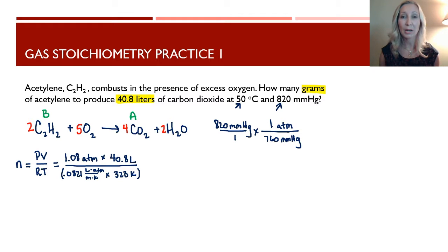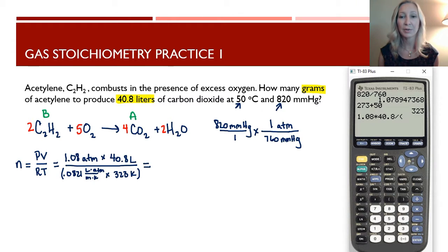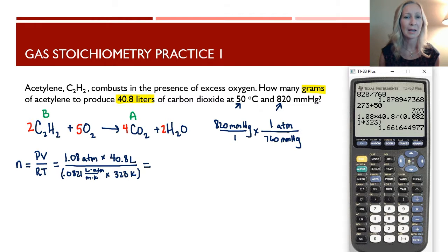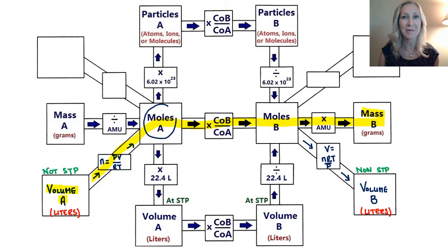Plugging into the calculator: (1.08 × 40.8) ÷ (0.0821 × 323). Be sure to use parentheses when you divide, otherwise your answer will be incorrect. This gives us 1.66 moles of CO₂ — the number of moles in that specific volume at that specific temperature and pressure. We are now at the moles position on the mole map.